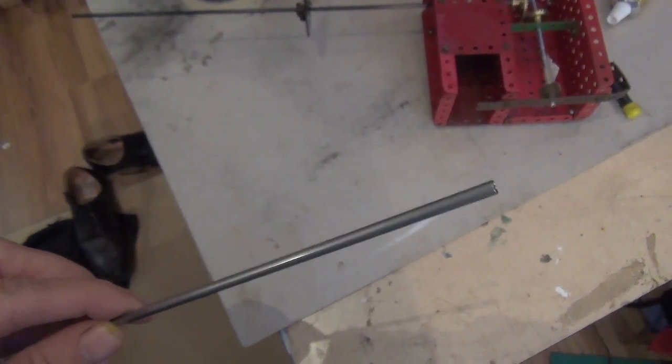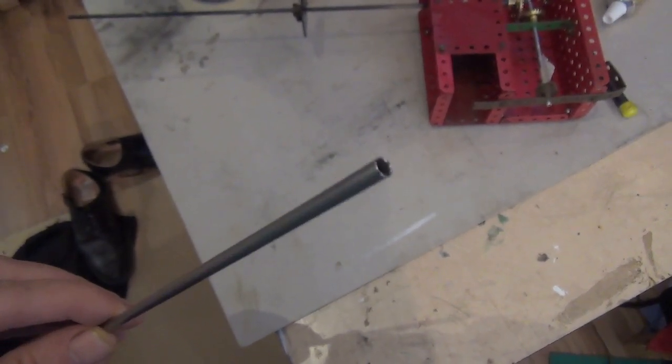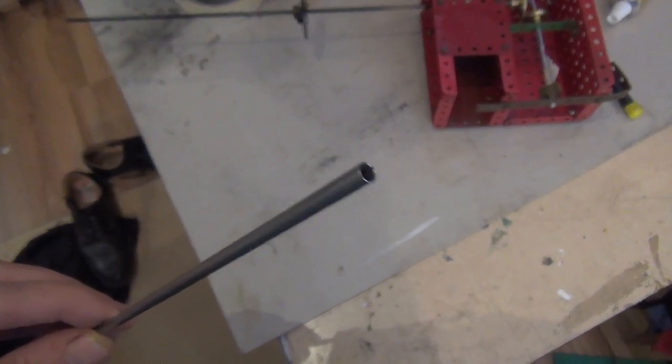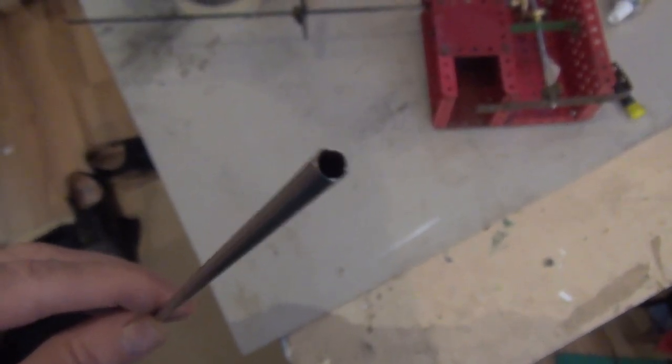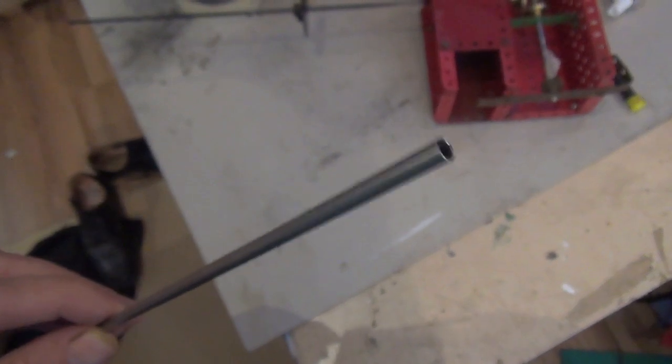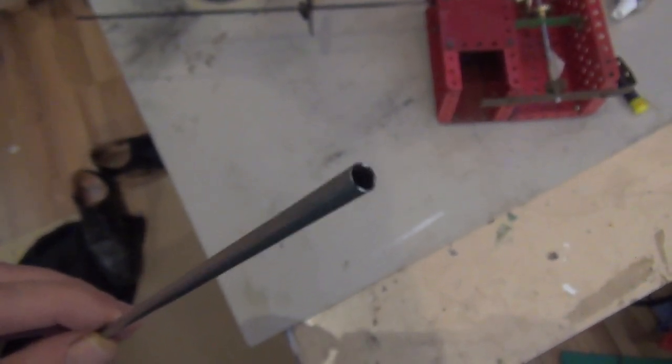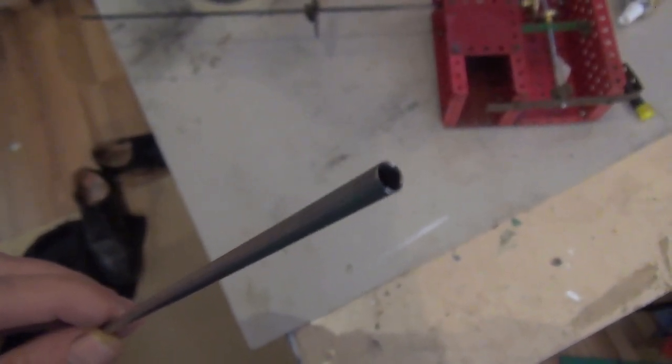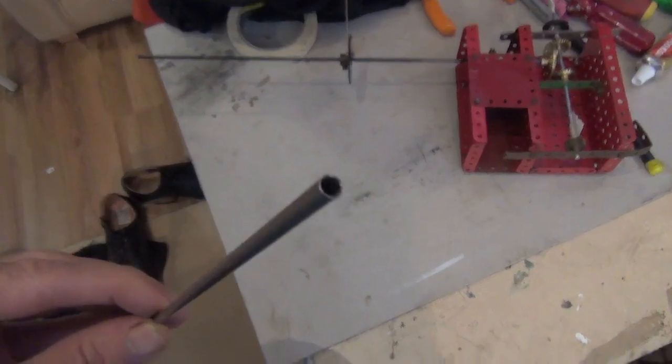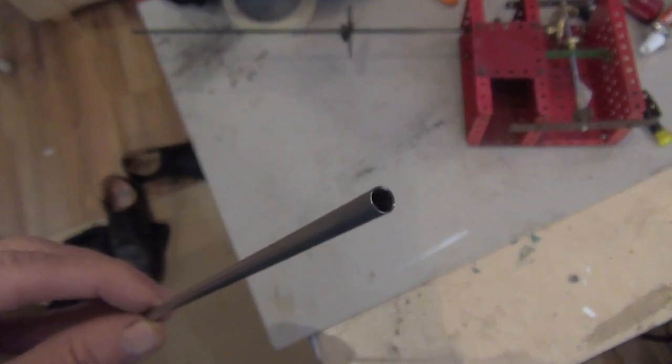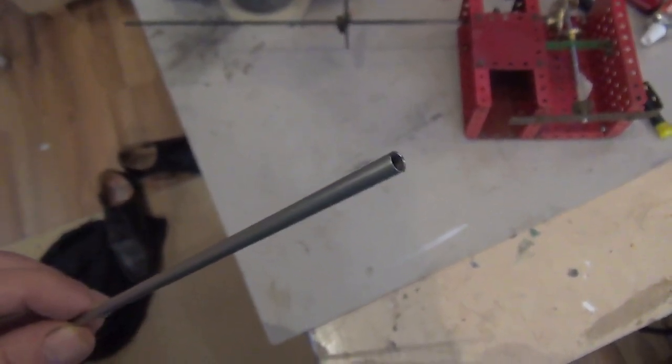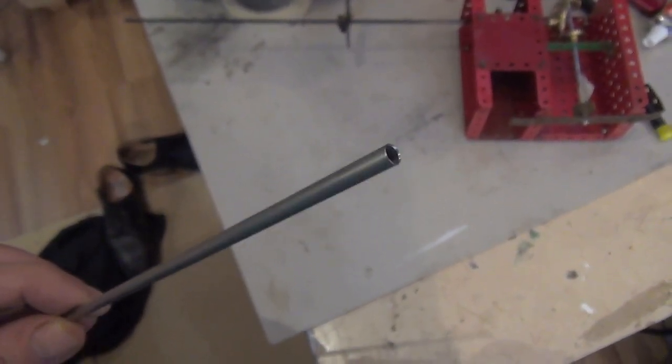And it's the same, almost exactly the same, outside diameter as Meccano rod and the internal diameter is one eighth of an inch. So I'm now waiting for some one eighth of an inch mild steel bar that I've ordered so that we'll have the internal rod and the external tube to run together.